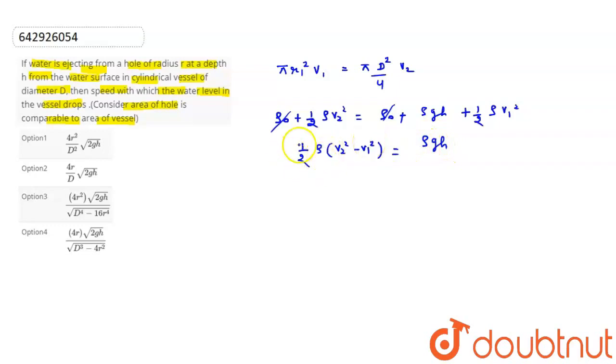So Rho is cancel out to each other. So V1 square, V2 square minus V1 square equals this is 2 G H.